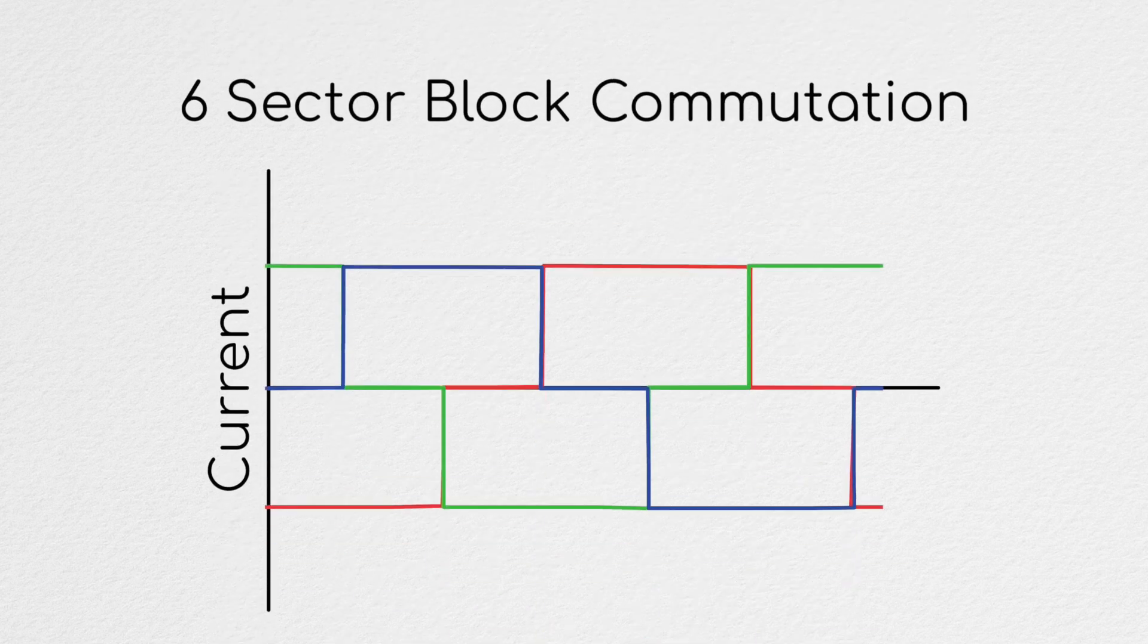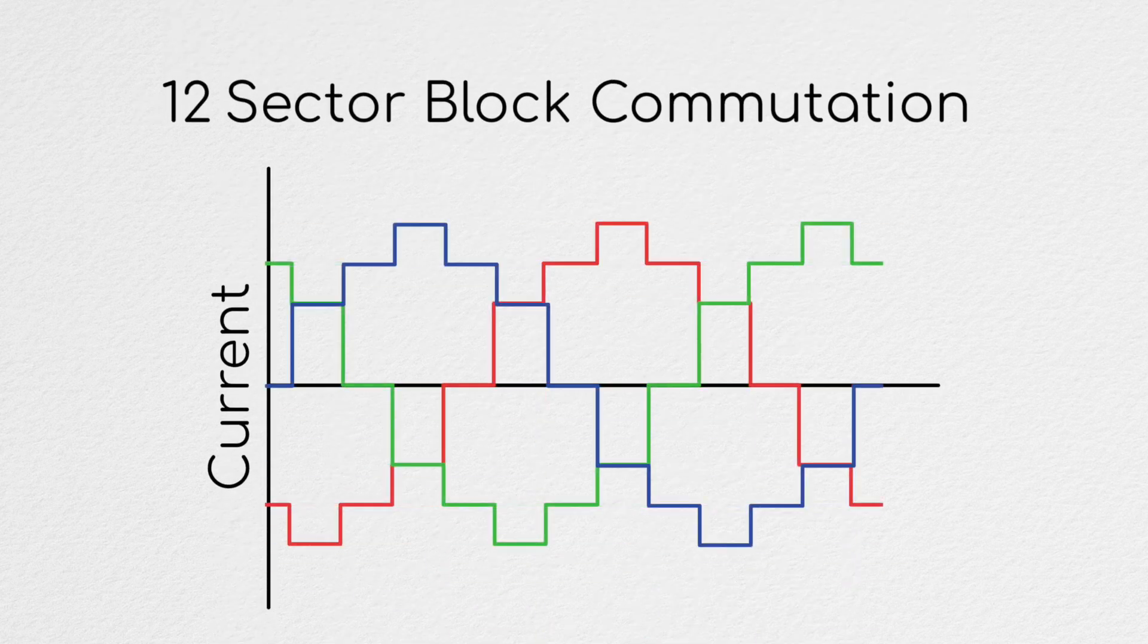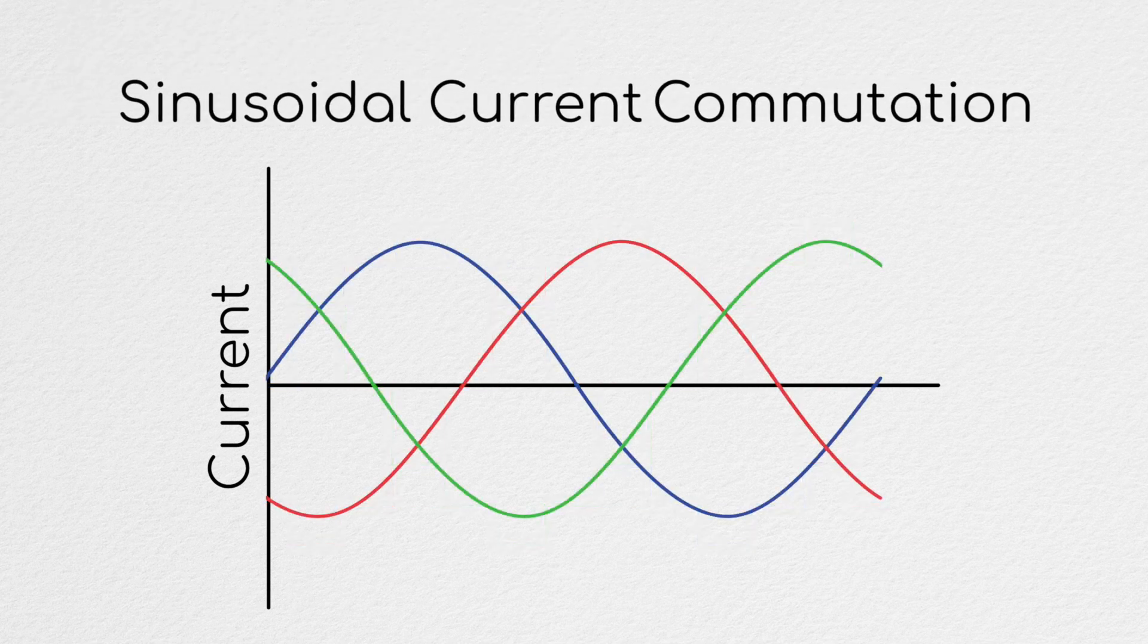Thus, we see that if we replace the current waveforms from block commutation with sinusoidal currents, we end up minimizing torque ripple and driving our d-axis current to zero.